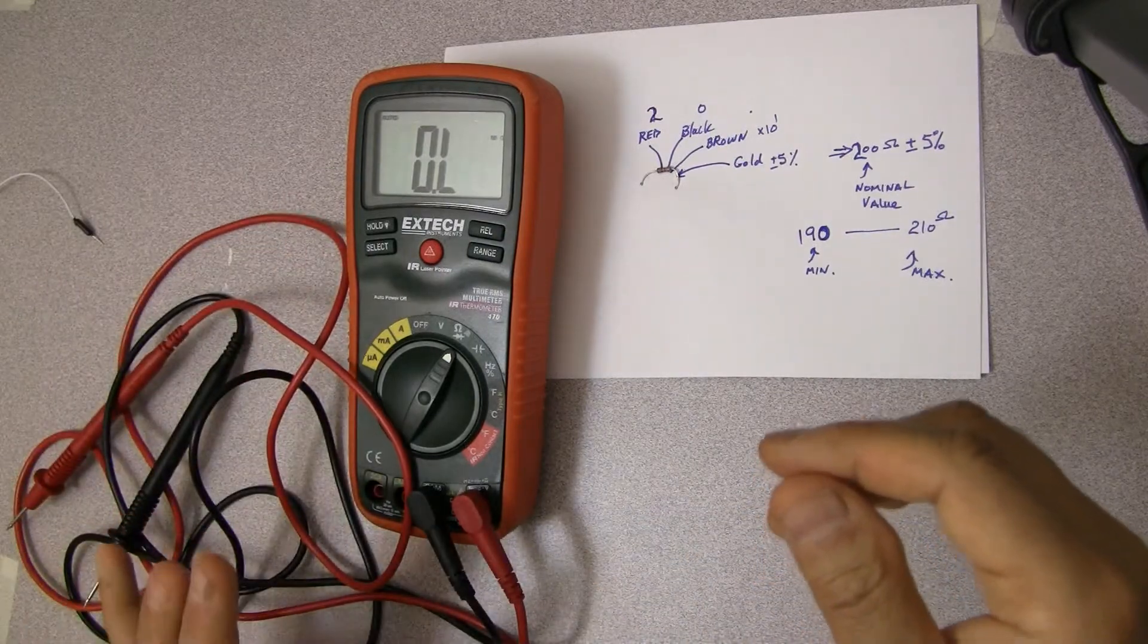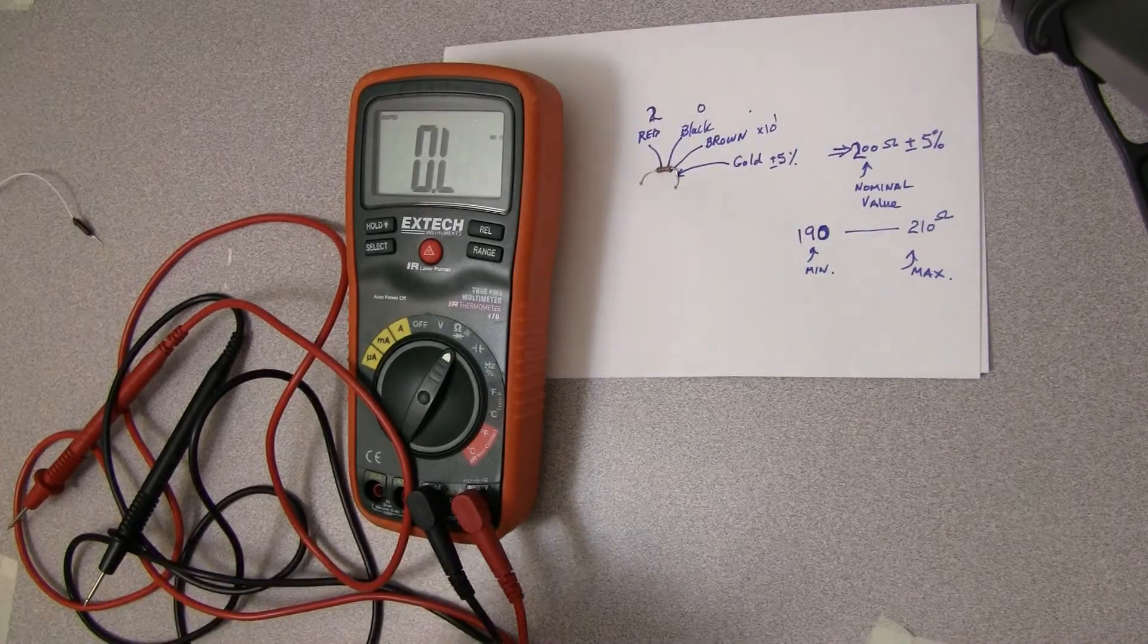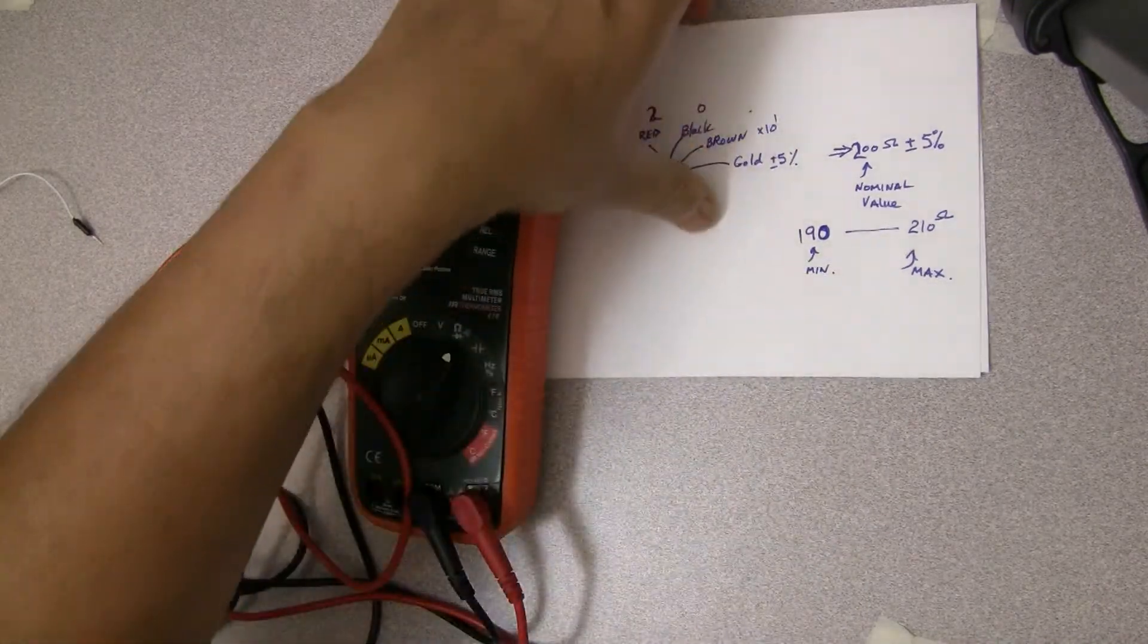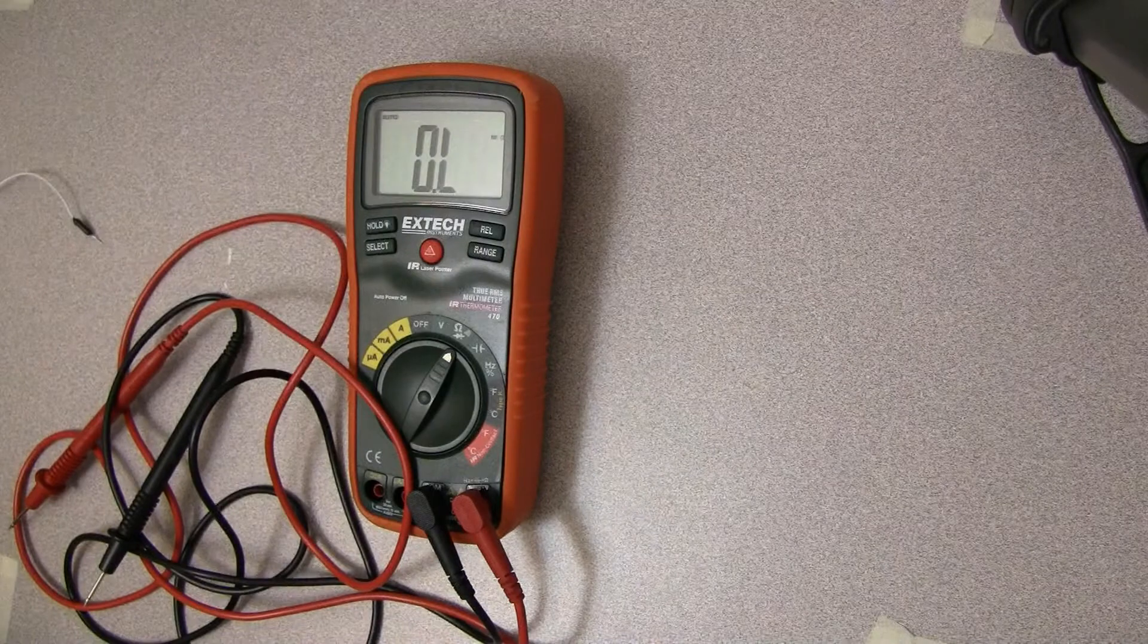That pretty much covers the resistance side of this. That's one of the functions that multimeter does. Now let's take a look at some of the other features.